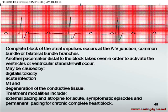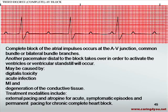A complete block of atrial impulses occurs at the AV junction, common bundle, or bilateral bundle branches. Another pacemaker distal to the block takes over to activate the ventricles. This may be caused by digitalis toxicity, acute infection, MI, or degeneration of the conductive tissue. Treatment usually includes an external pacemaker, atropine for acute symptomatic episodes, and permanent pacing for chronic complete heart block.